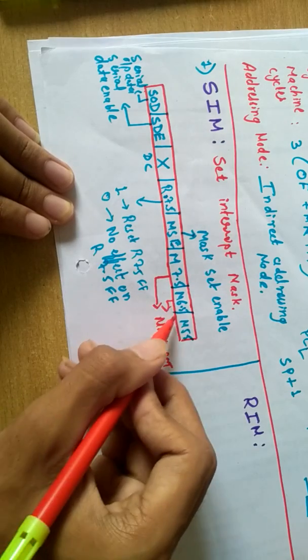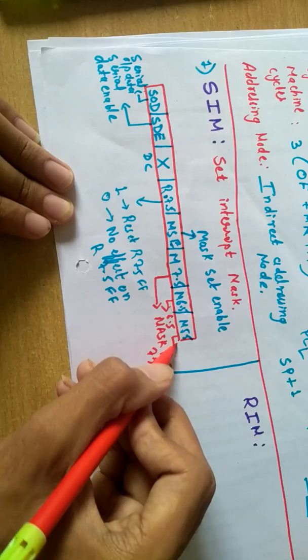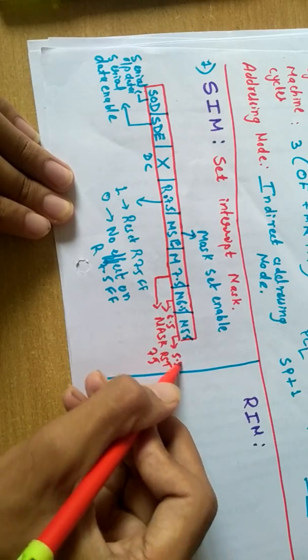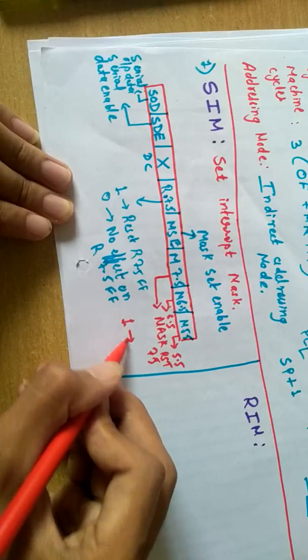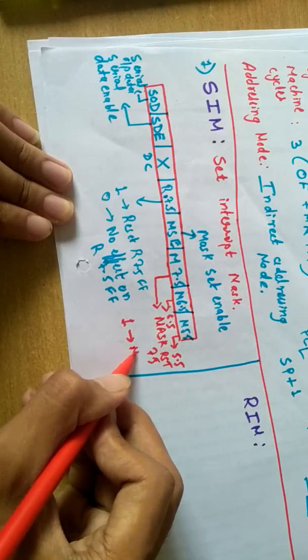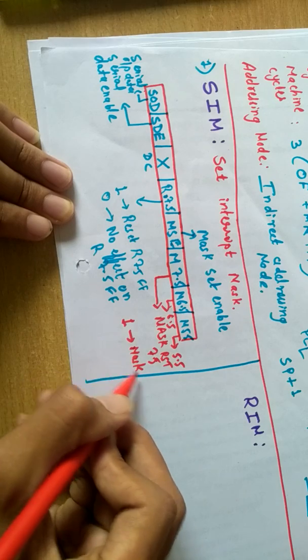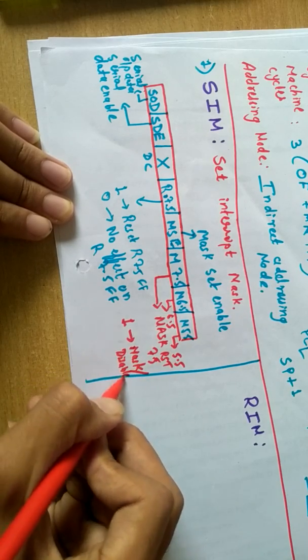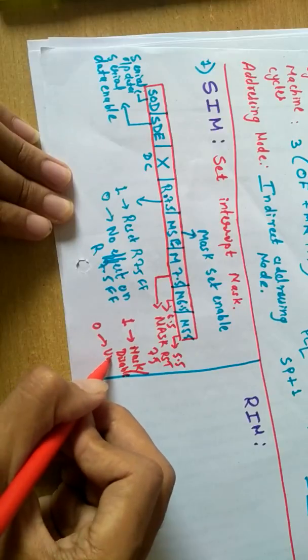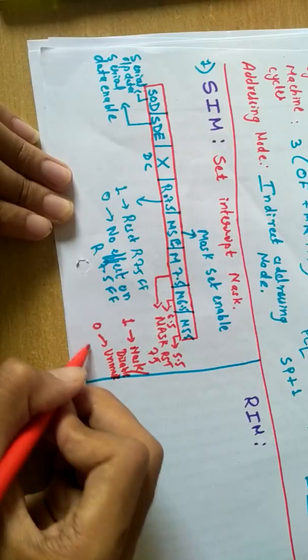How the masking is done: one means mask or we can say disable, and zero means unmask or we can say enable. So one is for masking.